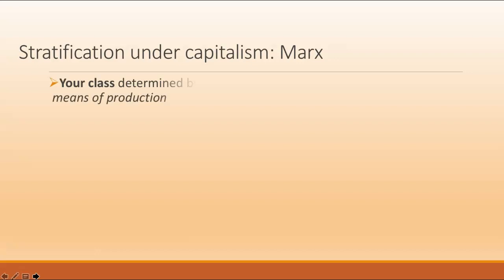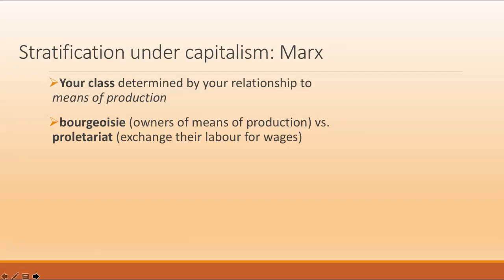In a capitalist system, the dividing lines are between those who own the means of production — companies, factories, etc., known as the bourgeoisie — and those who work for them, the proletariat.